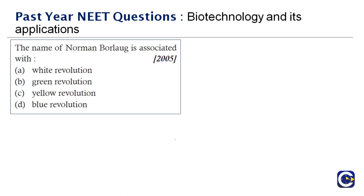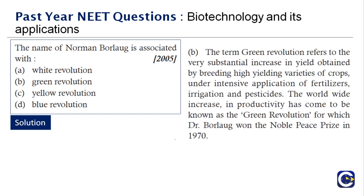Next question, asked in 2005: the name of Norman Borlaug is associated with — the term Green Revolution refers to a substantial increase in crop yield by breeding high-yielding varieties under intensive use of fertilizers, irrigation, and pesticides. Dr. Borlaug won the Nobel Peace Prize in 1970 for this. The answer is option B, Green Revolution.